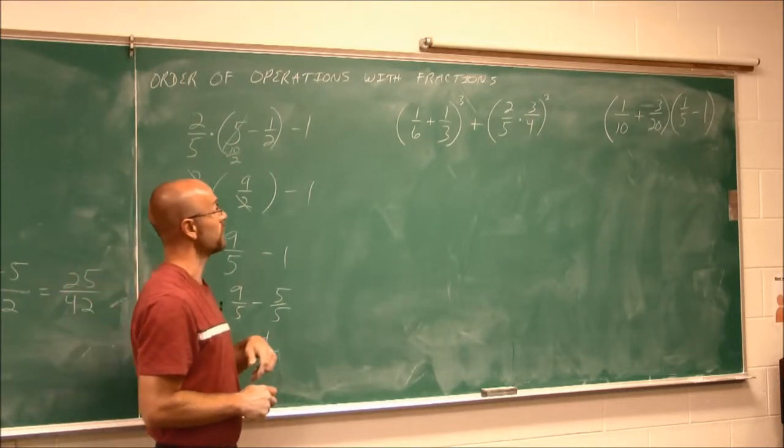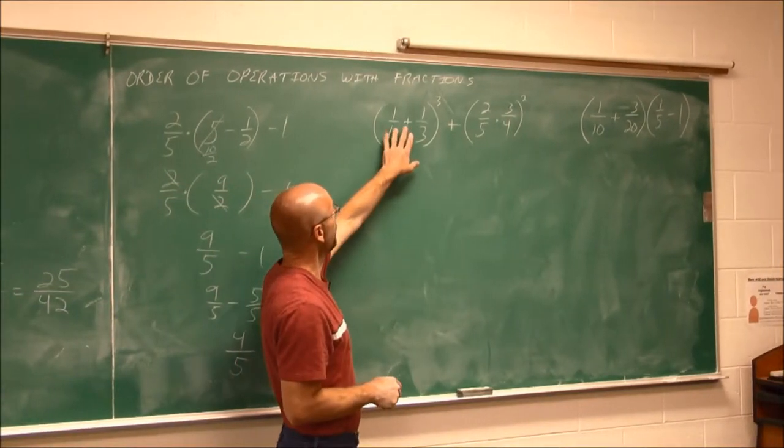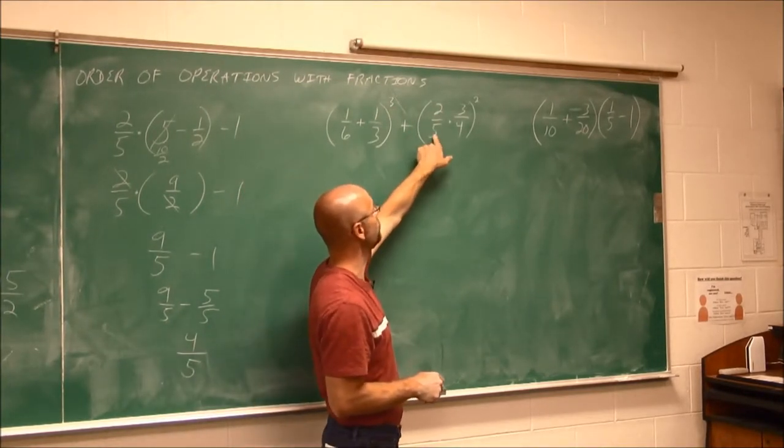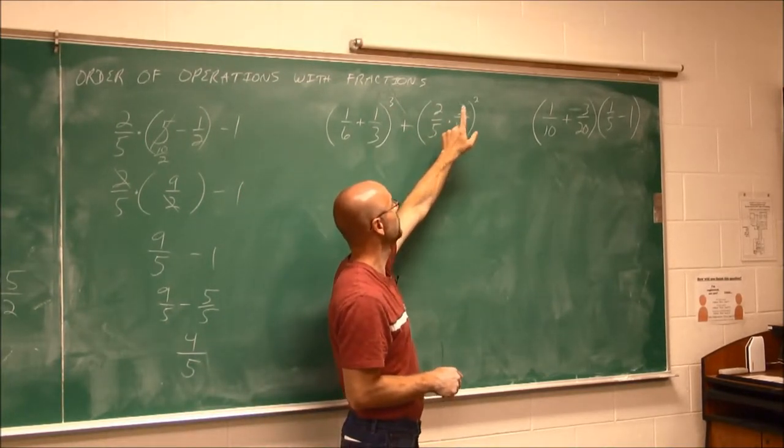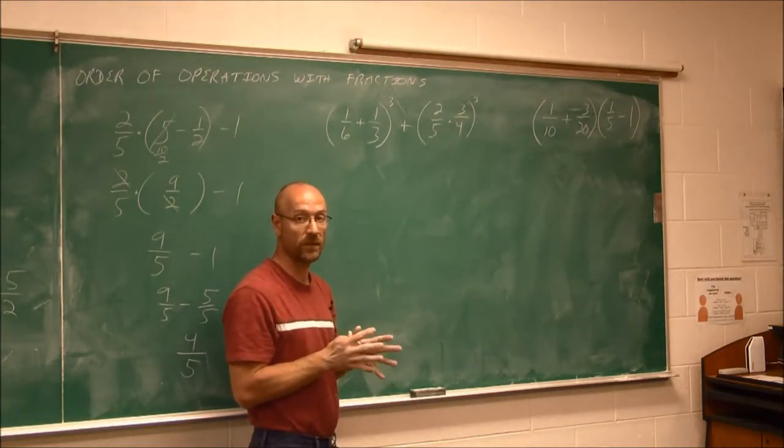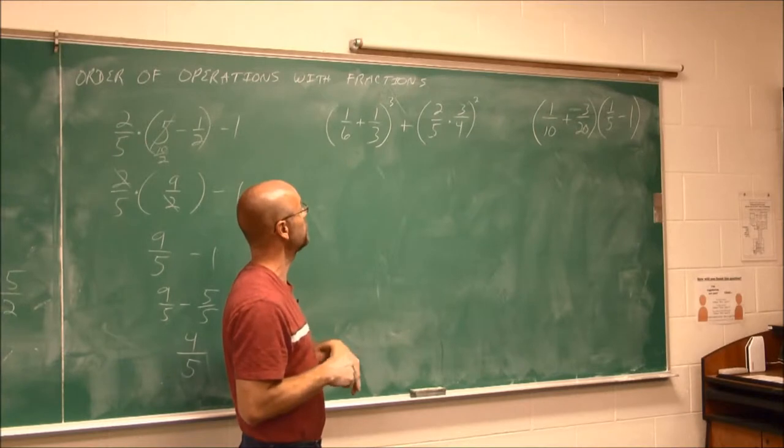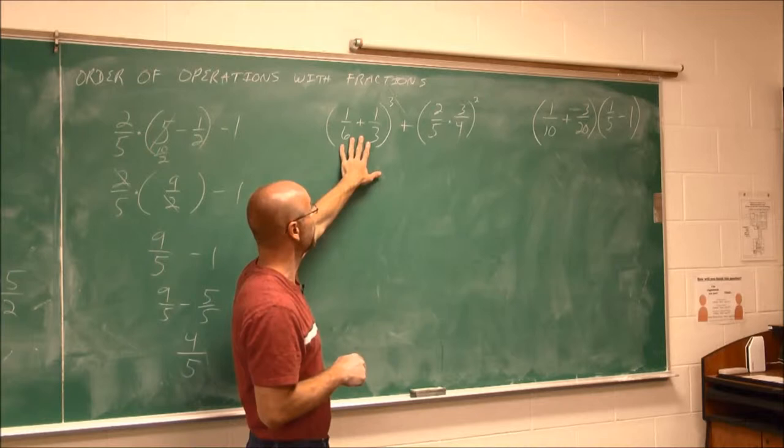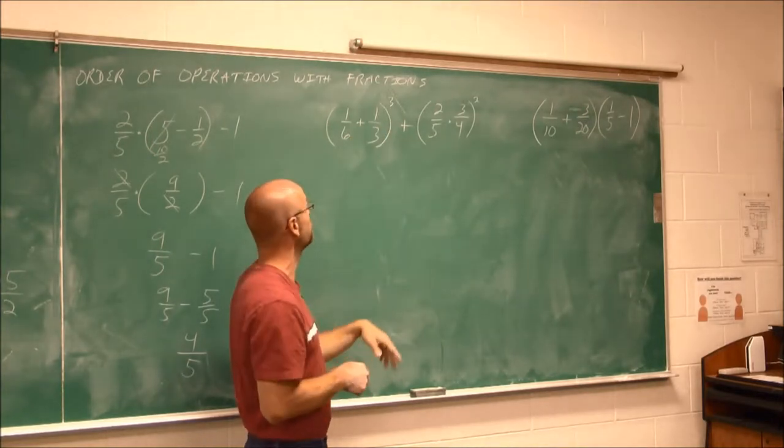Alright, let's look at another example. Here we have 1 sixth plus 1 third to the third power, plus 2 fifths times 3 fourths to the second power. We have to work within grouping symbols first. That's what order of operations tells us. And we have two grouping symbols. So I'm going to work within this one and then that one, just working left to right.